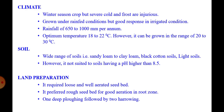Chickpea is a winter season crop, but severe cold or frost are injurious to this crop. Frost at the time of flowering results in failure of the flowers to develop seeds. Generally this crop is grown under rain-fed conditions but gives good response to irrigated conditions also. Excessive rains after sowing, or at flowering and fruiting, or hailstorms after ripening cause heavy loss. This crop is best suited to areas having moderate rainfall of 650 to 1000 mm per annum. Optimum temperature for this crop varies from 18 to 22 degrees centigrade.